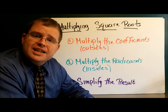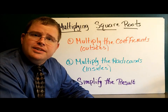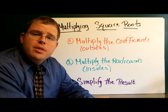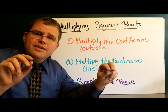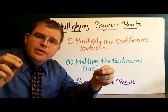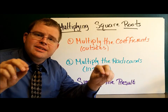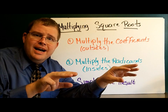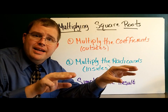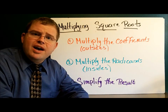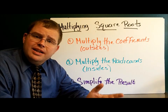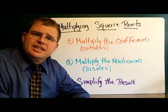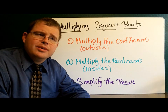Multiplying square roots together is actually a lot easier than it sounds. This is all you really have to do: you multiply the numbers that are on the outsides, the coefficients; you multiply together the numbers that are on the insides, the radicands; then you simplify your answer. That's really all there is to it. Let's take a look at a couple of examples and see how it's done.